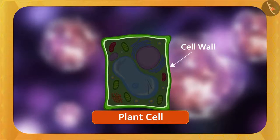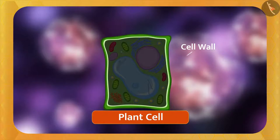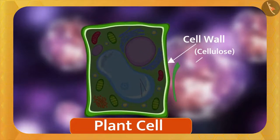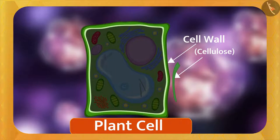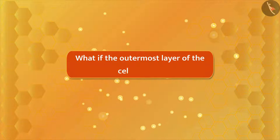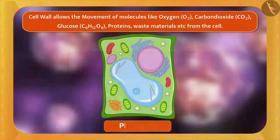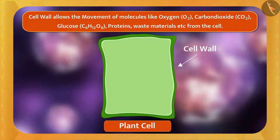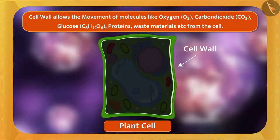You must have noticed that plants are a bit rigid and complex. The reason for this is the cell wall, as it is made up of a complex substance called cellulose. It is very thick and rigid and provides structural support to the plant. Because the outermost layer is rigid, it maintains the safety and structure of the cell.